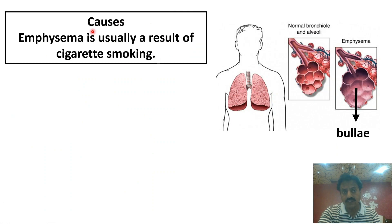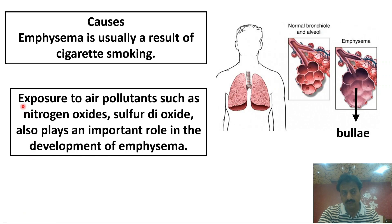اب causes کی طرف آتے ہیں — what are the causes of emphysema? Emphysema کا ایک cause یہ ہے کہ alveoli rupture ہو جاتے ہیں اور enlarge blebs بن جاتے ہیں۔ ایک اور cause ہے exposure to air pollutants such as nitrogen oxide and sulfur dioxide — they also play an important role in the development of emphysema.